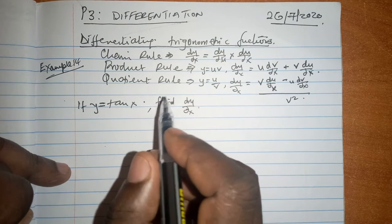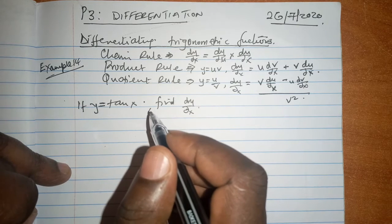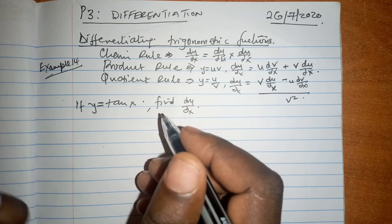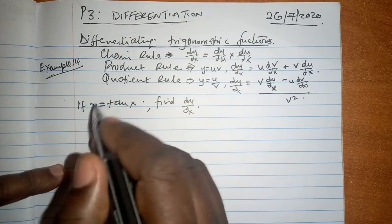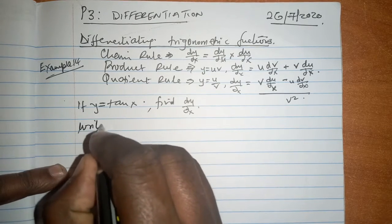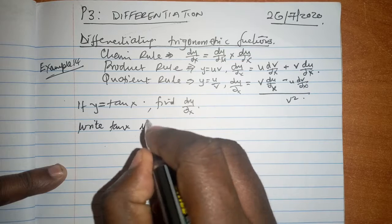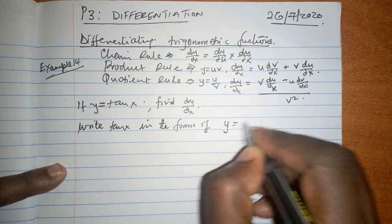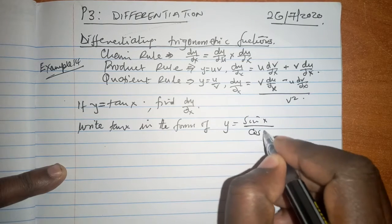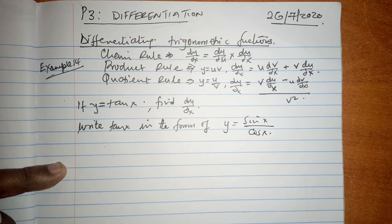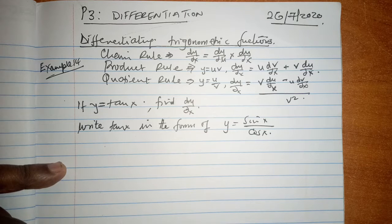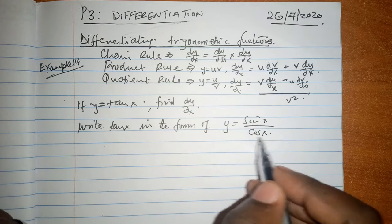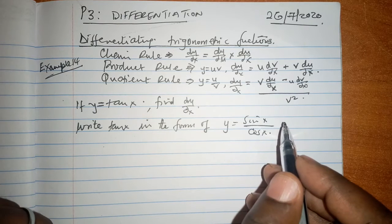Incidentally we have learnt the derivative of sine x as well as the derivative of cosine x. We have even gone further to show how they come about. So write tan x in the form of y is equal to sine x over the cosine of x. So definitely what we are having now is a fraction, and of course within this fraction, yes we could take the cosine of x up there and use the chain rule.